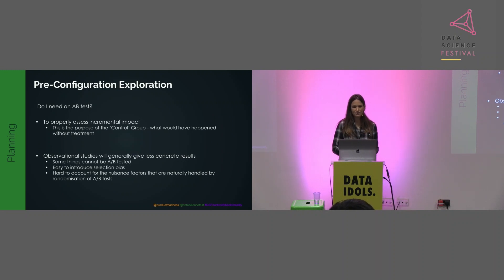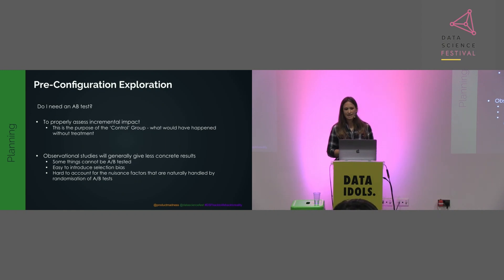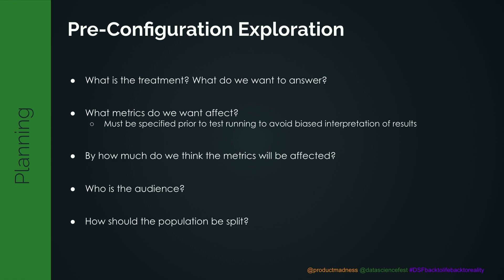Going into more detail: do we need an A/B test? If we want to properly assess incremental impact, an A/B test is very useful — the control group lets us find out what would have happened without the treatment. Observational studies give less concrete results and are easy to introduce selection bias into. We also need to define the treatment, what metrics we want to affect — specified before we run the test to avoid biased interpretation — how much we think these metrics will be affected, and always set a target about what we expect to see so we can evaluate the success of the test.